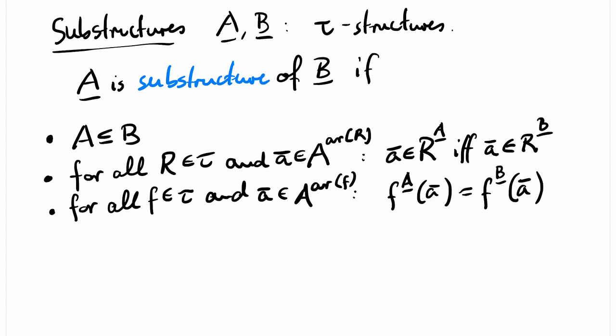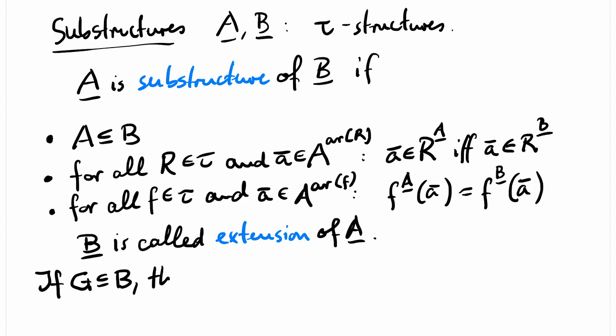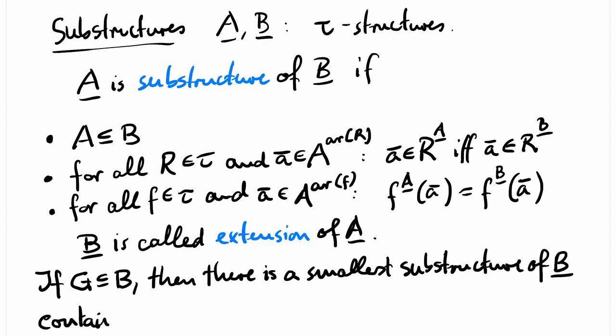In other words, on the elements of A, the two structures look the same. We then also say that B is an extension of A. Note that if G is an arbitrary subset of B, then there is a smallest substructure of B that contains G. This structure is called the substructure of B generated by G.